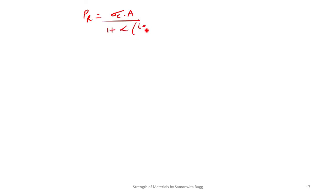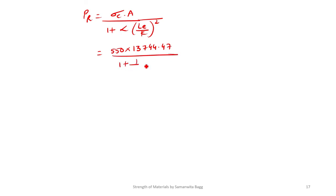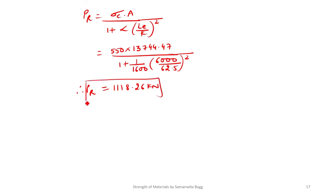Rankine's load: PR = sigma_c into A / (1 + alpha into (LE/K)²) = 550 into 13744.47 / (1 + (1/1600) into (6000/62.5)²), giving PR = 1118.26 kN. The ratio PE/PR = 1177.55 / 1118.26 = 1.053.